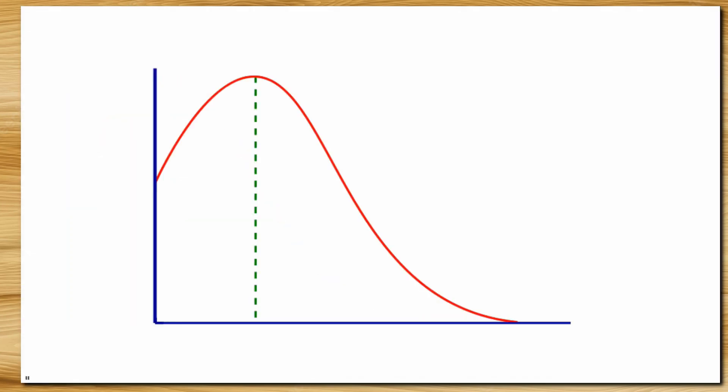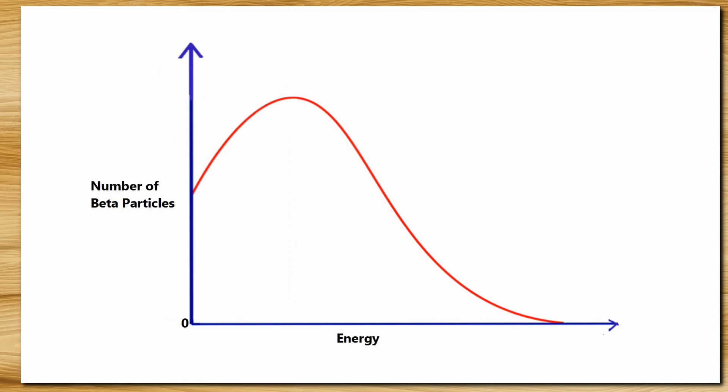The experiment showed a plot like this. There are some beta particles with very small energy. Then the number increases and then goes on decreasing to zero. Only a few beta particles have this amount of energy which is maximum. So beta showed continuous spectra.